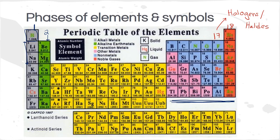The periodic table also indicates state of matter. Black symbols represent solids, the most common state. The red-colored elements — cesium, mercury, gallium, and bromine — are liquids at room temperature. The gases include all of Group 18 (noble gases) plus the diatomic non-metals: nitrogen, oxygen, fluorine, and chlorine, which in nature exist as N₂, O₂, F₂, and Cl₂. Hydrogen is also a gas.